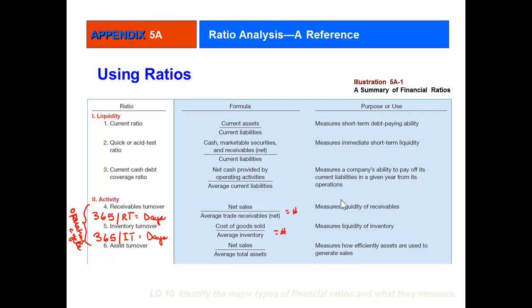Coming off of that is the quick or acid test ratio. The difference is the quick or acid test does not include inventory or prepaids because they're slower to generate cash—you have to wait on a third party. We like the quick ratio above 1. The third is current cash debt coverage, which looks at your cash flow from operations to see if it's more than adequate to cover your current liabilities.